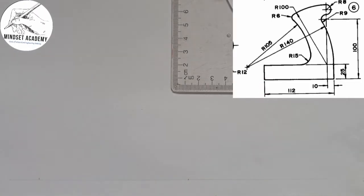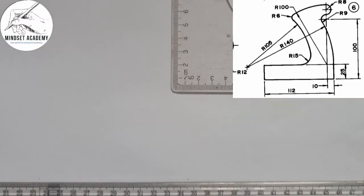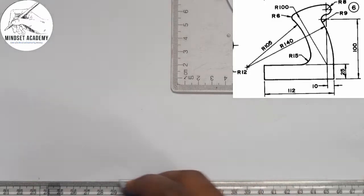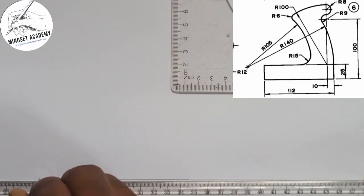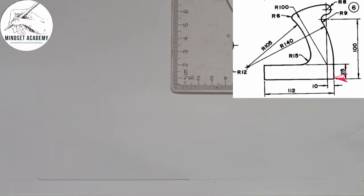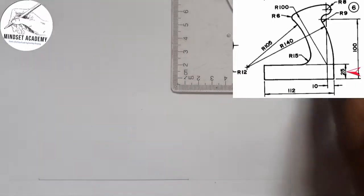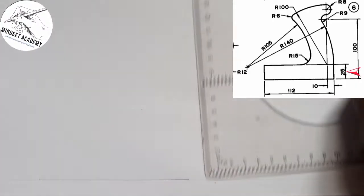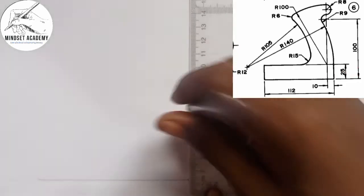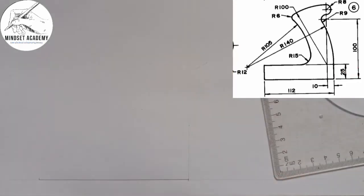I am going to thicken it because on the figure that line is thickened from that point to this point. The thickness from here to here is giving us 25. Now I am going to measure vertically in this manner — from here to here — I am going to measure 25 on that line.